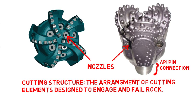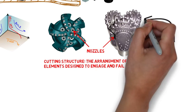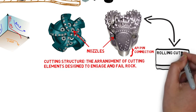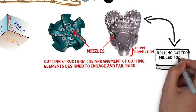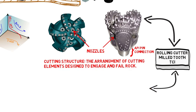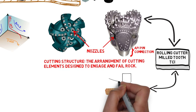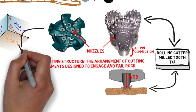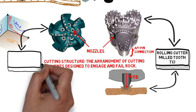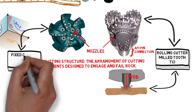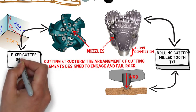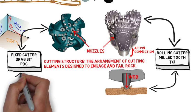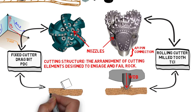Drill bits are usually classified by their cutting structure. In general, there are rolling cutter bits, which have moving components and use mainly weight to fail the rock in compression, and fixed cutter bits, which drag cutting elements across the bottom of the hole, using mainly torque to fail the rock in shear.